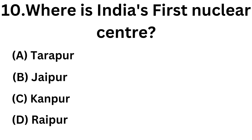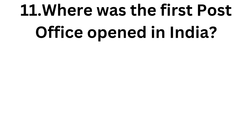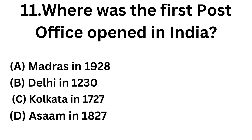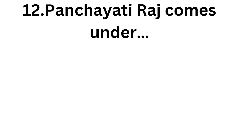Options are: Tarapur, Jaipur, Kanpur, Raipur. The answer is Tarapur. The eleventh question: where was the first post office opened in India? Options are: Madras, Delhi, Kolkata, Assam. The answer is Kolkata, in 1727.